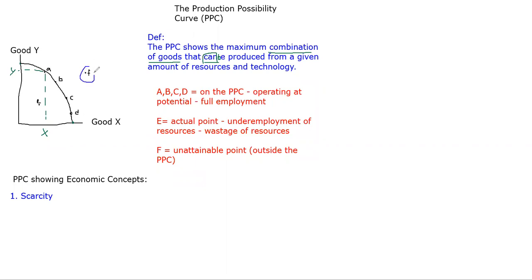You cannot go to unattainable points - you cannot operate outside the frontier. Why? Because you have a given set of limited resources. Your wants could be infinite; you might want to operate at unattainable points, but it doesn't mean you'll actually get there. You might desire to operate outside the PPC, but because of limited resources you cannot. At the very max, if you're 100% efficient, you can operate on the PPC. That shows scarcity.